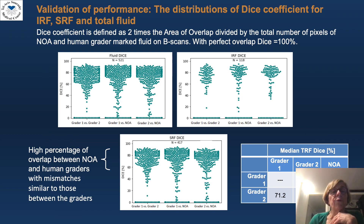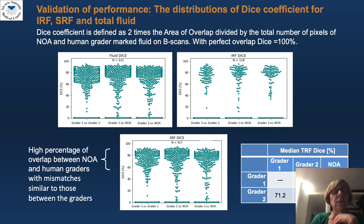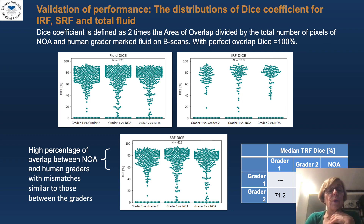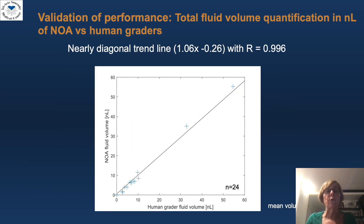When you look at the Dice coefficient, which is defined as twice the area of overlap divided by the total number of pixels NOAA and the human grader marked fluid on BISCANs, with a perfect overlap being 100%, you can see that there is a high percentage of overlap between NOAA and the human graders, with mismatches that are similar to those between the human graders. This is true for intra-retinal fluid, sub-retinal fluid, and total fluid.